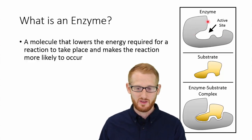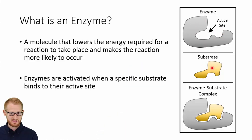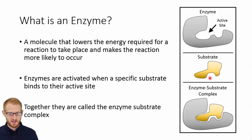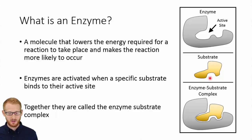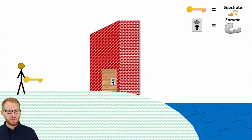What this enzyme is going to do is allow this substrate to bind to it, and it's going to bind in this active site here. Notice how they're essentially the same shape — this functions like a lock and key. So if it doesn't fit together, they're not going to work together. When they come together, this is called the enzyme-substrate complex.